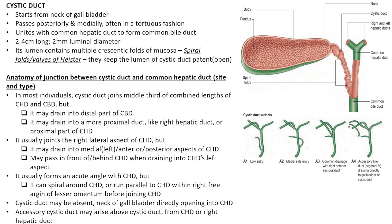The cystic duct may sometimes be absent, with the neck of the gallbladder opening directly into the common hepatic duct — this is called a sessile gallbladder. Accessory cystic ducts may arise from the common hepatic duct or right hepatic duct above the cystic duct, draining part of the gallbladder, and accessory hepatic ducts may also drain into the gallbladder.